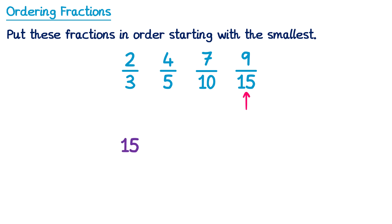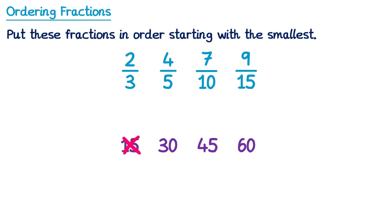Let's go through each of these numbers and see if it's a multiple of all of the denominators. Starting with 15: 3 and 5 go into 15, but unfortunately 10 doesn't, so 15 won't work. Let's try 30: 3 goes into 30, 5 goes into 30, so does 10 and so does 15. All of them go into 30, so this is a number we could use for our denominator.